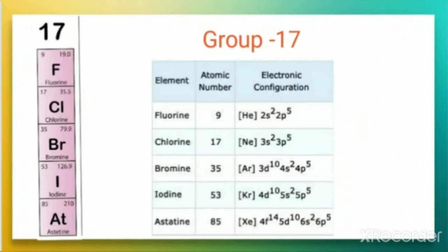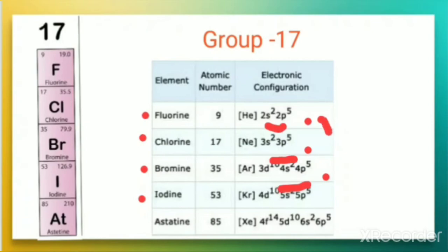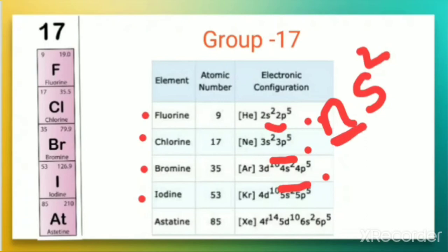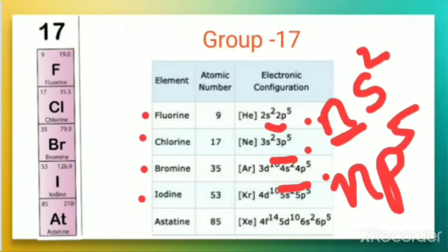Group 17 elements, called halogens — fluorine, chlorine, bromine, iodine — also have a similar pattern: fluorine has 2s², 2p⁵; chlorine has 3s², 3p⁵; bromine has 4s², 4p⁵, and so on, where n is the outermost shell that gives the period. The general electronic configuration for group 17 is ns², np⁵.